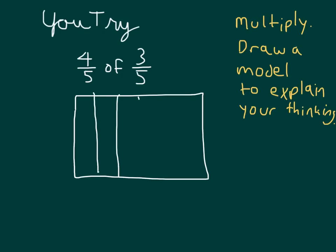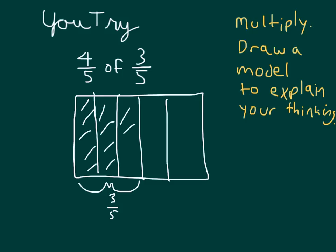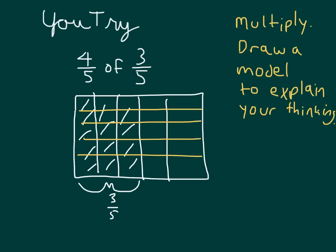Did you model three-fifths first? Did you remember to label it and shade it in? After modeling three-fifths, you could, and should, take four-fifths of it. So you should have divided horizontally into fifths, and then looked at four-fifths of that. Counting them up, that is three by four, which would be twelve total. And our denominator would be twenty-five, because this is five by five. And twelve-twenty-fifths is in simplest form.